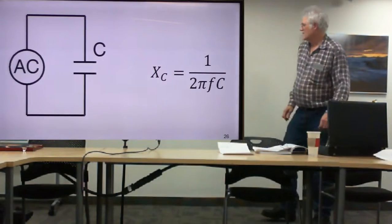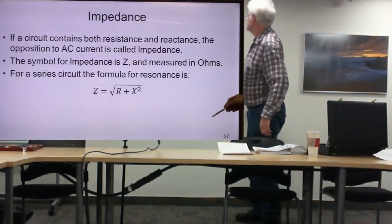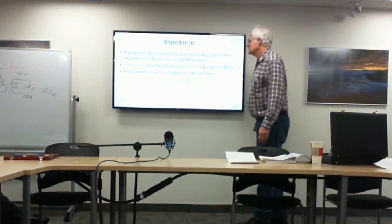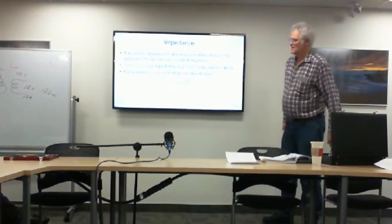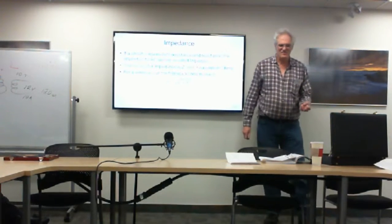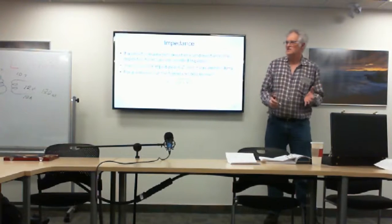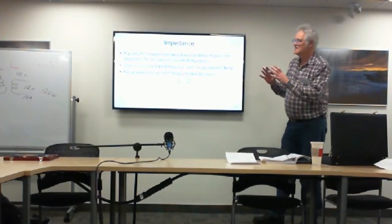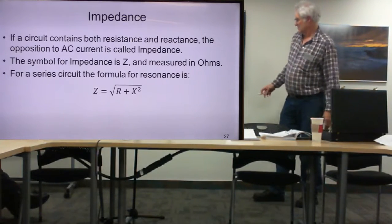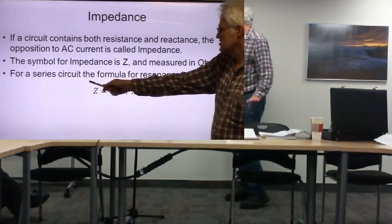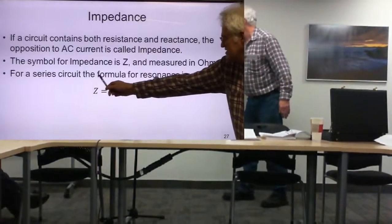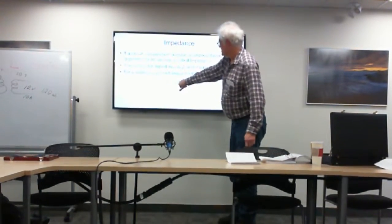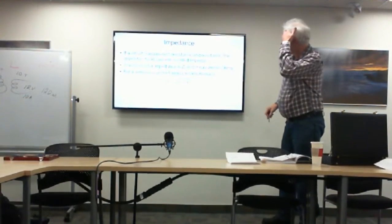If a circuit contains both resistance and reactance, the opposition to AC current is called impedance — it's like our AC resistance. We commonly hear this term when talking about speakers rated at, say, eight ohms — that's the combination of the wire's resistance and the actual reactance of the inductor or transformer forming the speaker. The formula for impedance in a series circuit is: Z = √(R² + X²).